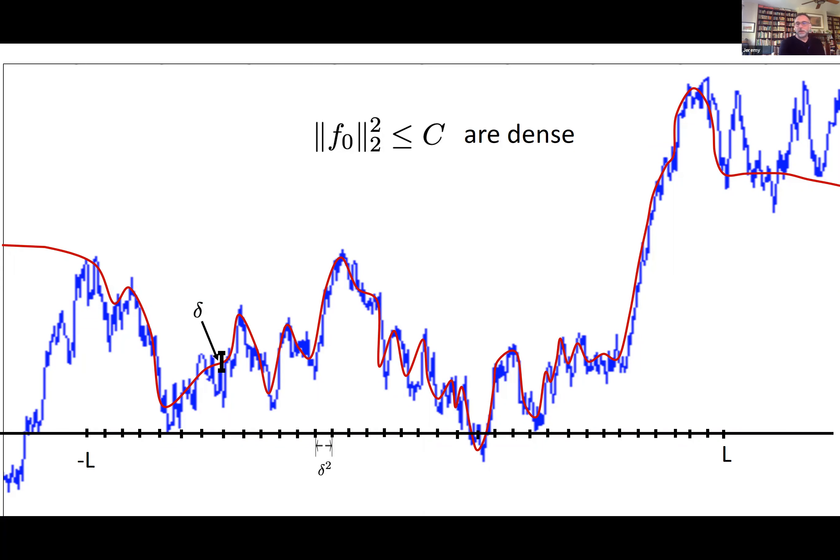F₀ is not the height function — it's the density of the initial height functions with respect to the measure ν, which is not a probability measure, but F₀ dν is a probability measure. Please keep asking questions. I want to try to finish.